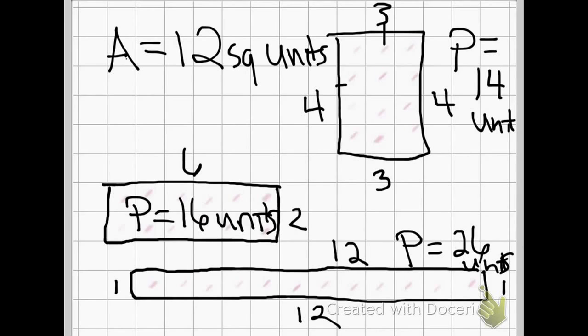So here we have 3 different rectangles but once again the perimeters are all different. They've got the same area of 12 square units but they've got different perimeters. So it's important to remember that when you're dealing with area and perimeter, 2 rectangles can have the same area but that doesn't mean they're going to have the same perimeter.